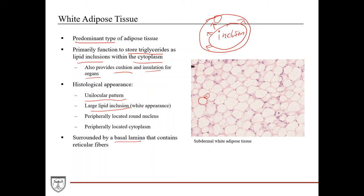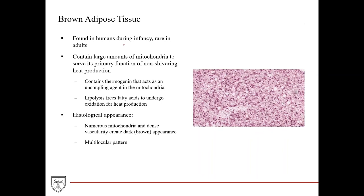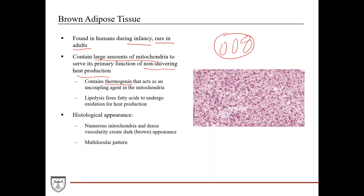Brown adipose tissue is found in humans during infancy and is rare in adults — we lose brown adipose tissue as we grow older. A major difference is that it contains large amounts of mitochondria within the cytoplasm. Its primary function is not triglyceride storage but non-shivering heat production. It accomplishes this via a protein called thermogenin, which acts as an uncoupling agent in the mitochondria.